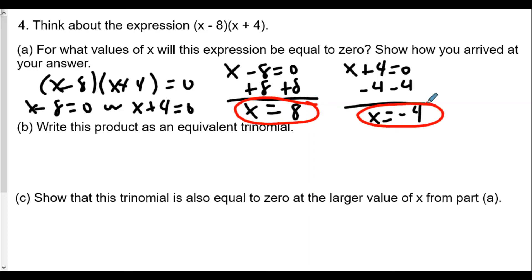now it says write this product as an equivalent trinomial, so we'll do the box method, or the area array method, x minus 8, x plus 4, we're going to get in this case x squared minus 32, okay, and so we'll have x squared, now negative 8 plus positive 4 is negative 4x minus 32, so this will be the equivalent trinomial,